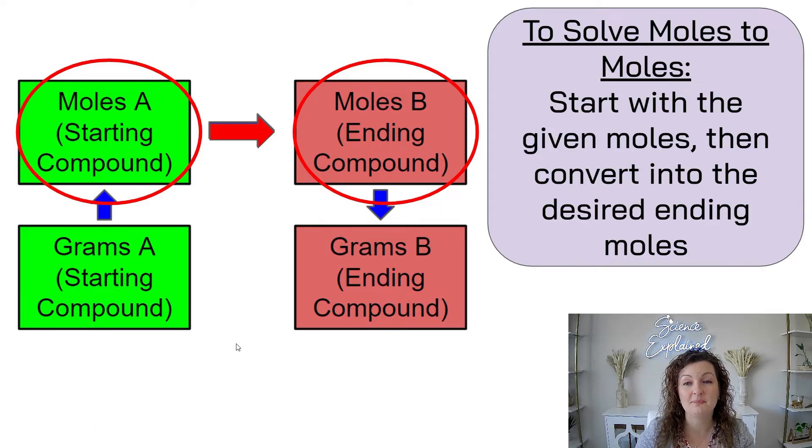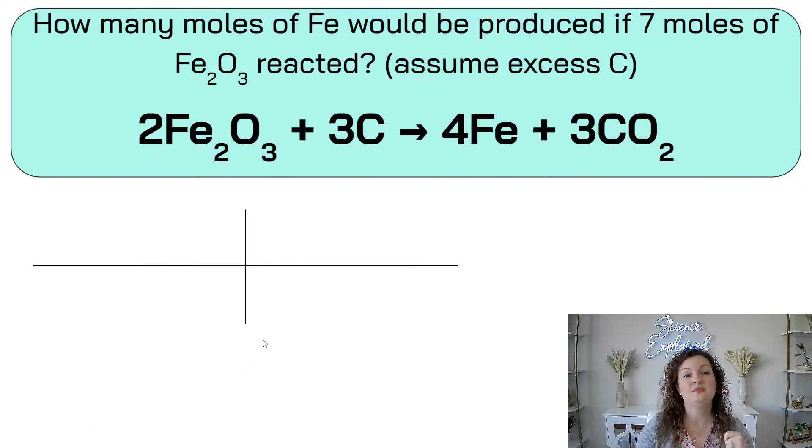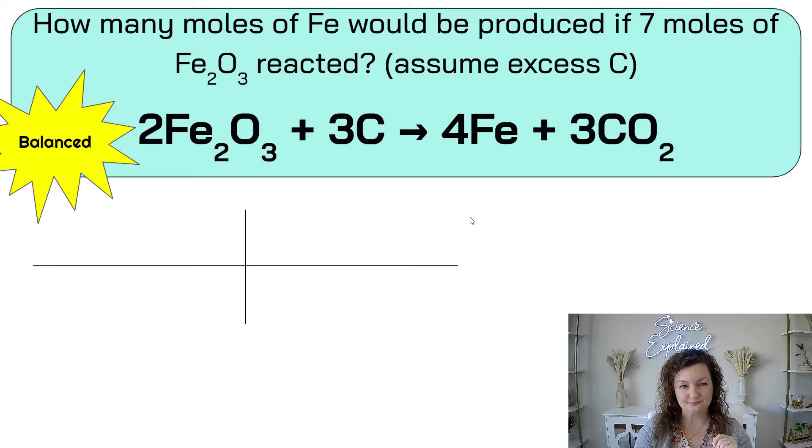Okay, so we have a new roadmap for stoichiometry. You can see you need to start at a green block and you need to end at a red block. For this video, mole to mole, we're just going to be focusing on starting at moles and ending at moles. So we're crossing one arrow, which means we have one T in our bridge. In other words, this is a one-step problem. Let me show you. How many moles of Fe would be produced if 7 moles of Fe2O3 reacted? And we're going to assume there's an excess of carbon.